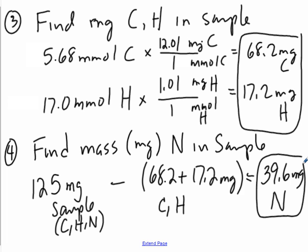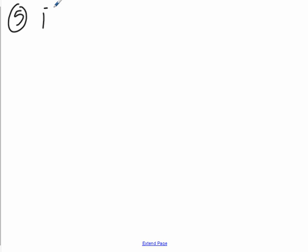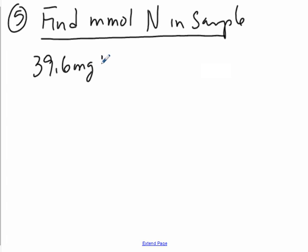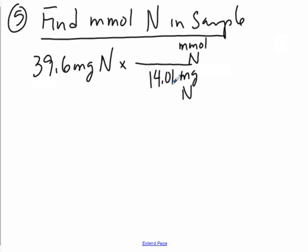Now that we've got the mass of nitrogen, we can find how many millimoles of nitrogen were in the sample. We have 39.6 milligrams of nitrogen. Using one unit multiplier — 14.01 milligrams per millimole — we get 2.83 millimoles of nitrogen. I'll put a box around that. So now we have the millimoles of carbon (5.68), hydrogen (17.0), and nitrogen (2.83) all boxed.